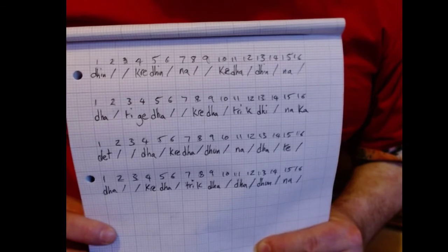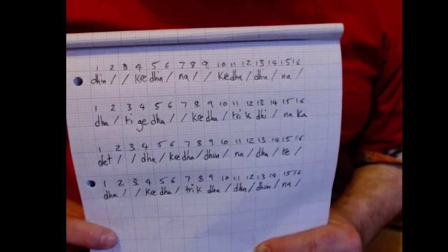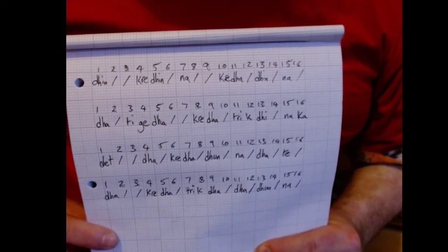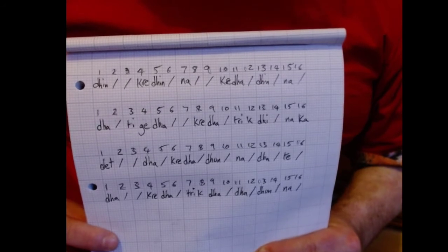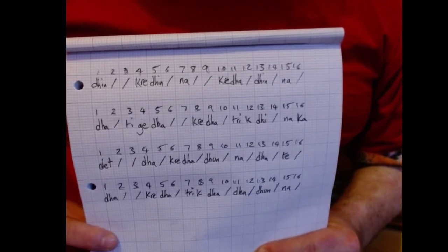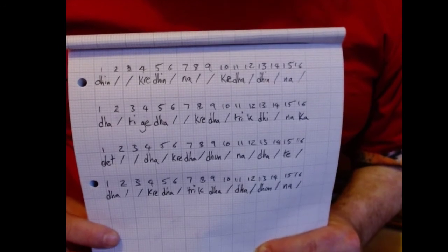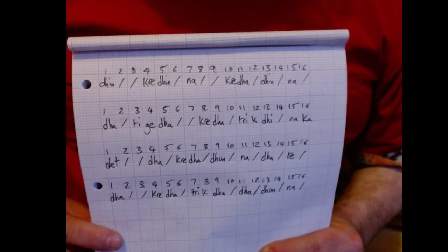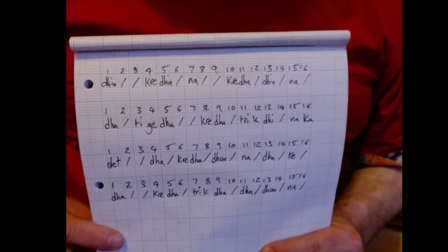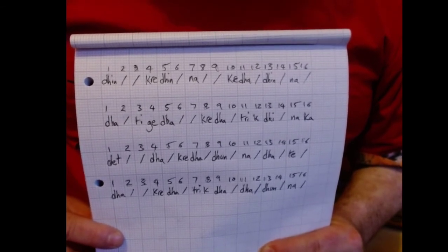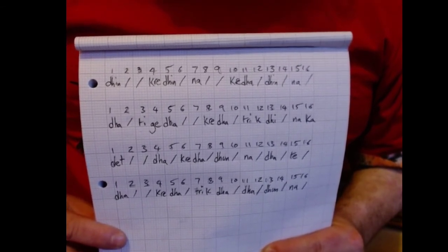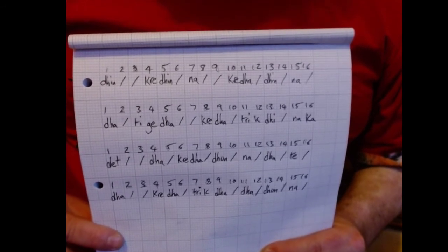Moody, Tin, Kr din, Kr ta, Tin, Na, Kr ta, Te, Na, Kr ta, Tra ka din Na, Te, Da, Kr da, Din, Na, Da, Te, Da, Kr da, Tra ka da, Da, Do, Na. So together it sounds like this.